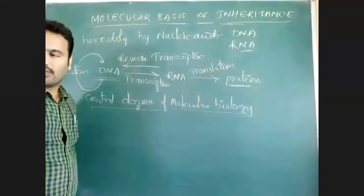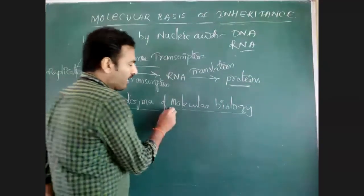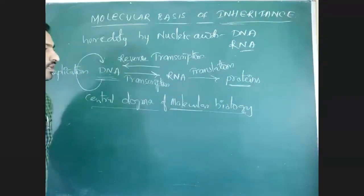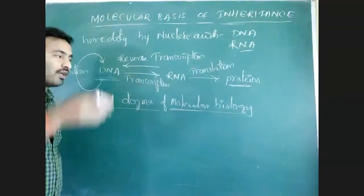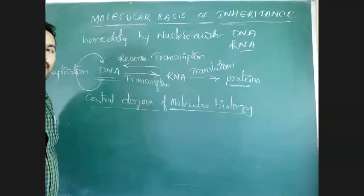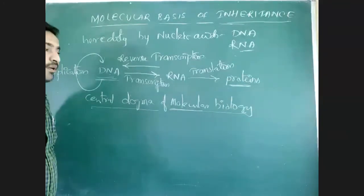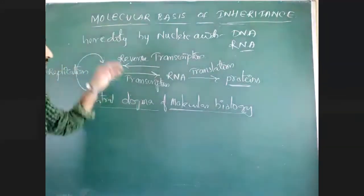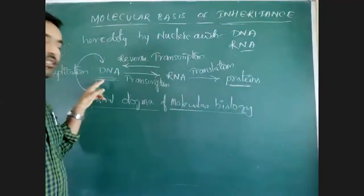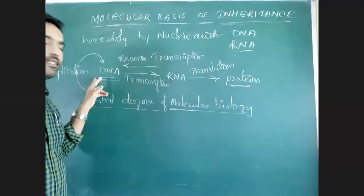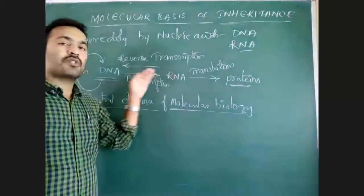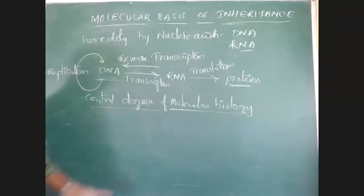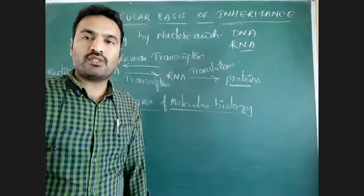Central dogma of molecular biology — molecular biology means study of molecules or study of inheritance characters at molecular level. DNA is a macromolecule; at molecular level we study the inheritance pattern. That is what we are calling molecular biology, and this is called the molecular basis of inheritance. Inheritance of characters is based on the DNA or genes present in DNA. DNA is expressed into proteins by transcription followed by translation, and that protein expresses a particular character.